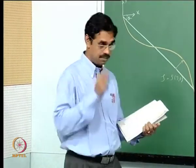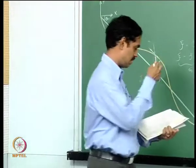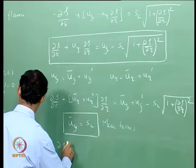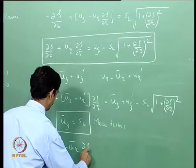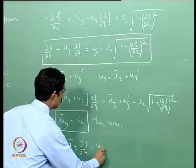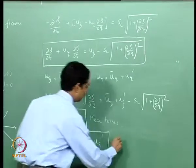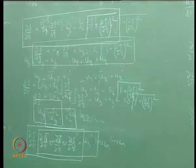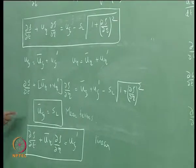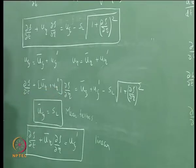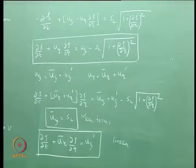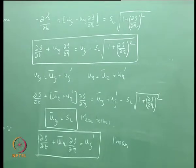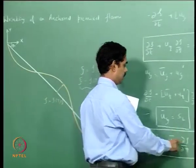Taking a time average of the equation to separate the mean terms, you get u_psi bar equals S_L times the square root of 1 plus (partial zeta bar by partial eta) squared. This is the mean equation — it says that the mixture velocity should balance the flame speed, which is consistent with our earlier physical reasoning about how a Bunsen burner flame stays steady.